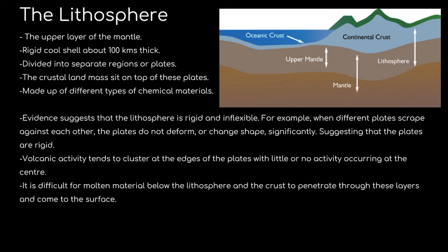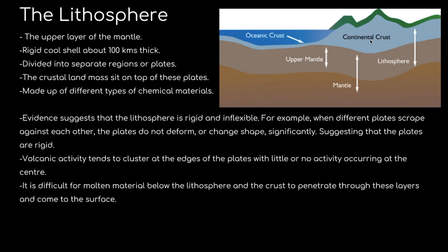Here is a picture of the lithosphere. It shows the oceanic crust and the continental crust, which together form the full crust. Here we have the upper mantle, also called the lithosphere, and below that is the asthenosphere — the second part of the mantle, lying below the lithosphere.